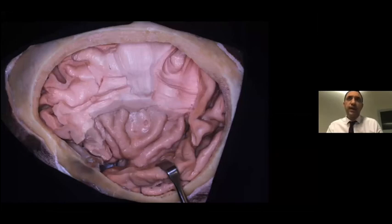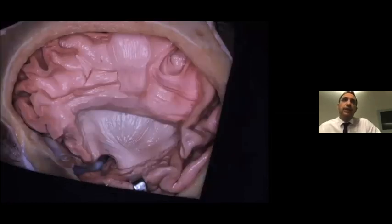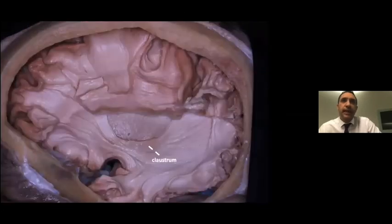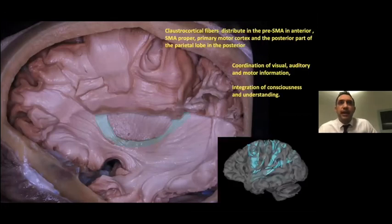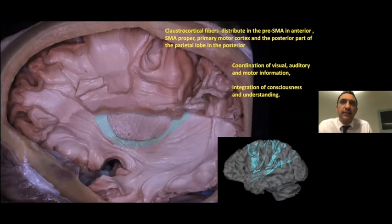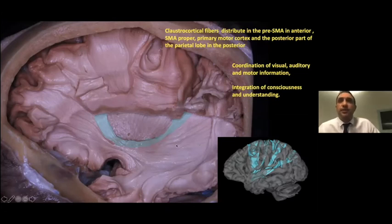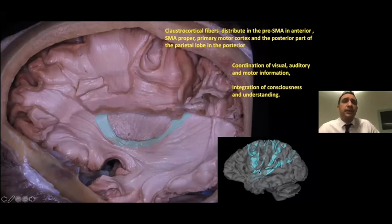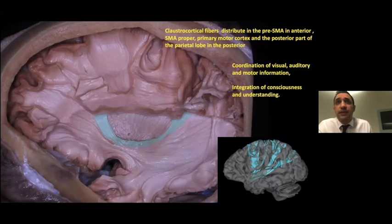After temporal lobe retraction, we see the insular cortex. Proceeding from lateral to medial through the central core and decortication, we reach the external capsule. Removing further, we see the claustrum and claustrocortical fibers. These fibers originate from the claustrum, form the dorsal external capsule, proceed between the putamen and the extreme capsule, and distribute within the corona radiata. They have a wide distribution including the pre-SMA anteriorly, the semi-preparatory primary motor cortex, and the posterior part of the parietal lobe posteriorly. Functionally, they are related to coordination of visual, auditory, and motor information, and integration of consciousness.